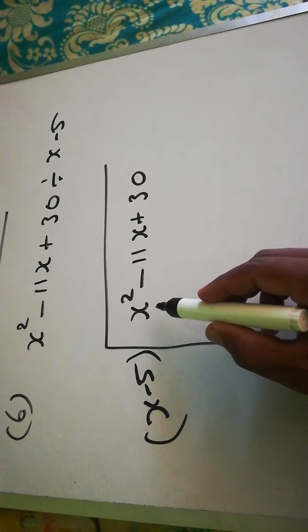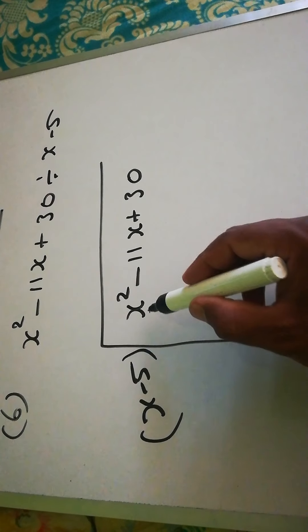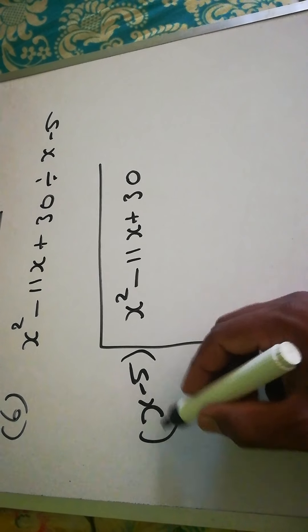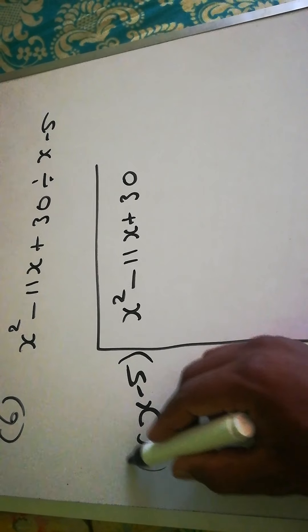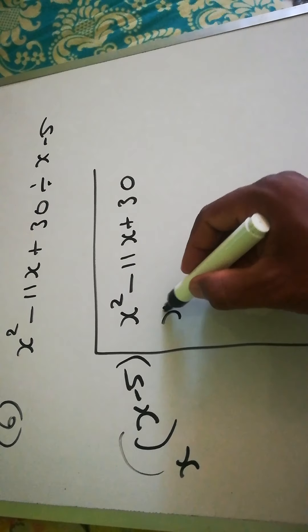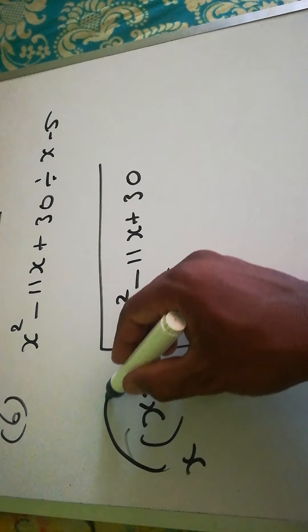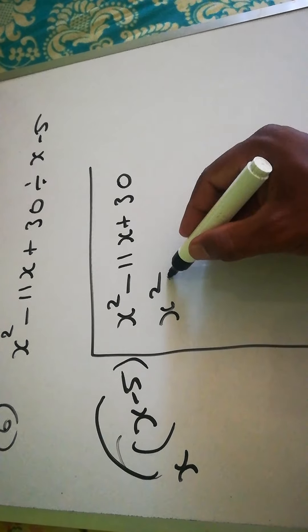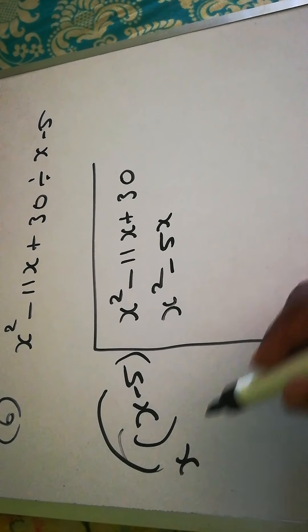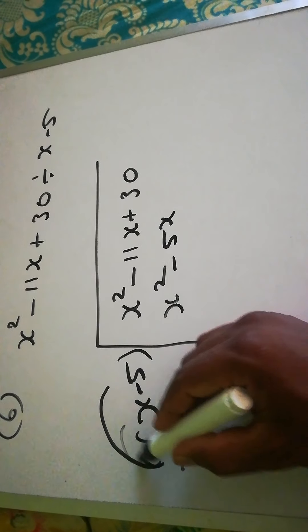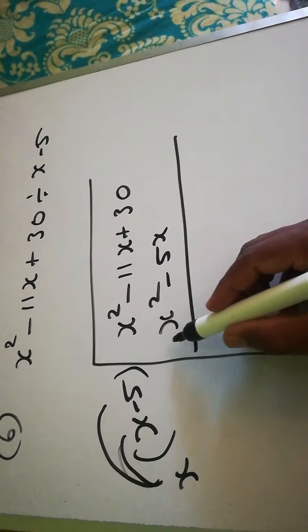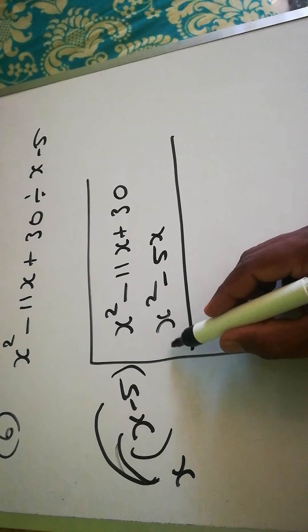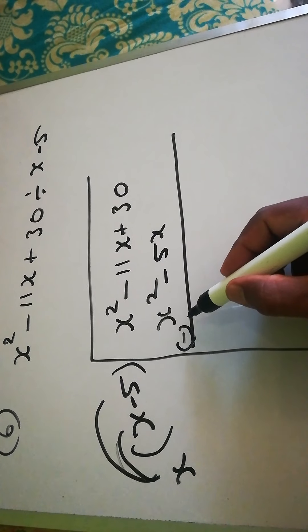To get x² here, we multiply x by x to get x². Then x into 5 gives minus 5x. We'll multiply like this.